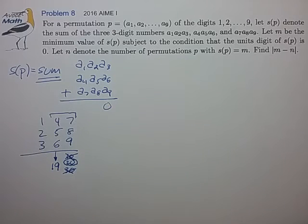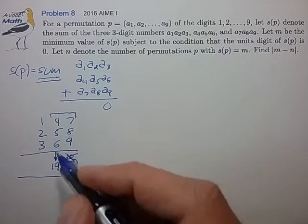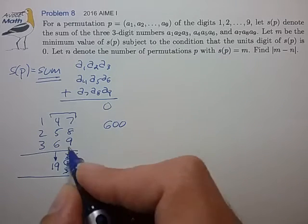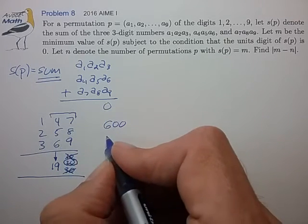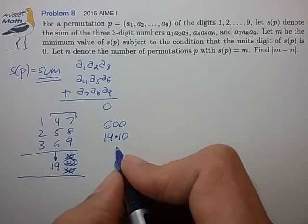So right off the bat, it looks like we know one of the portions of the answer that we're trying to seek. We know the sum of these three numbers. The hundreds digits have to add up to 600. The tens place have to add up to 19 times 10.